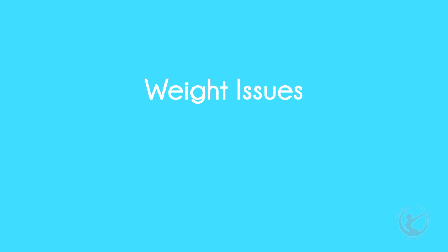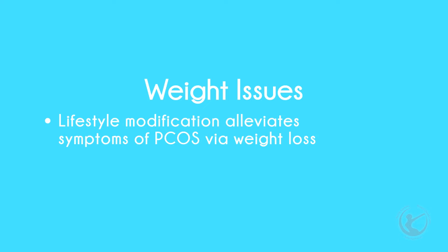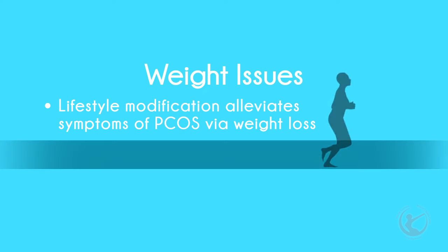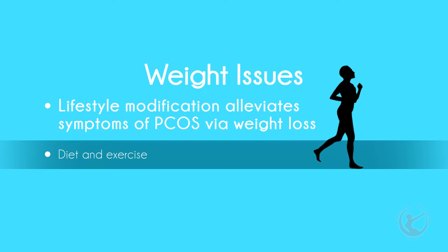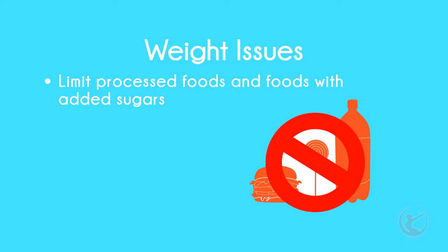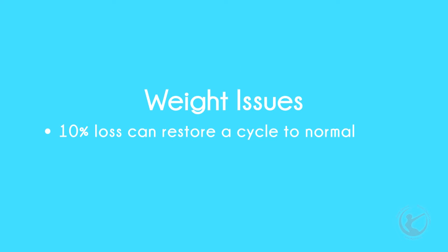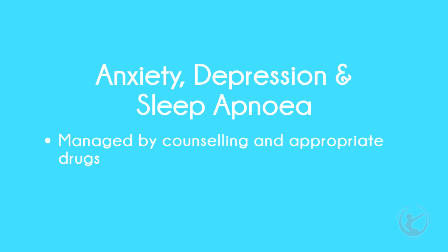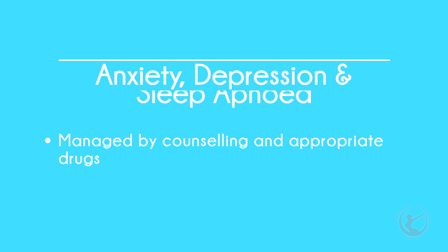Weight issues: lifestyle modification can help any of the symptoms of PCOS, and weight loss certainly helps all the symptoms. Modifying lifestyle by diet and exercise has been shown to be extremely helpful. Often patients who have struggled to lose weight find they lose weight a lot easier whilst they are on metformin. Limiting processed foods and foods with added sugars is the aim. Even a 10% loss in body weight can restore a normal period and make a cycle more regular. Anxiety, depression, and sleep apnea can be managed by counselling and appropriate drugs.